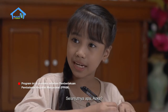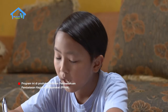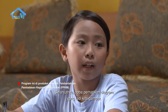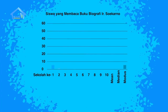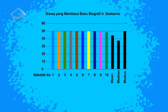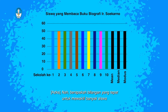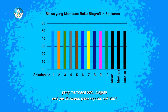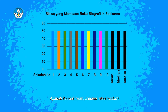Selanjutnya, coba perhatikan diagram yang tadi kita gambar. Berapakah bilangan yang tepat untuk mewakili banyak siswa yang membaca buku biografi Insinyur Soekarno pada 10 sekolah? Apakah itu nilai min, median, atau modus? Teman-teman, yuk kita tuliskan juga jawabannya di buku catatan.